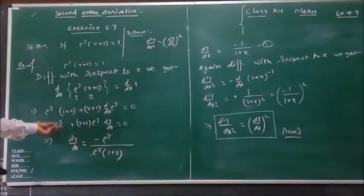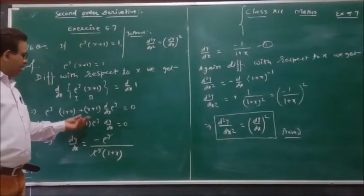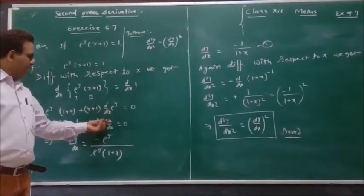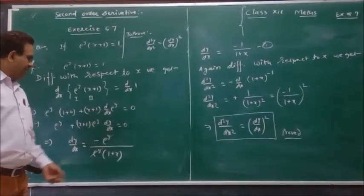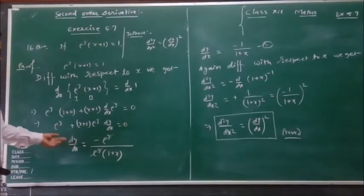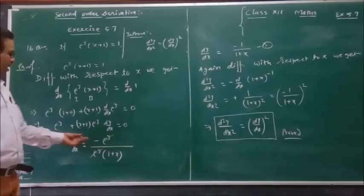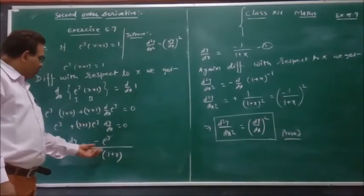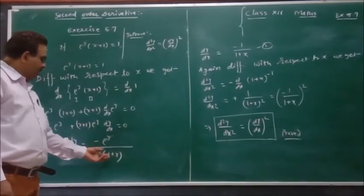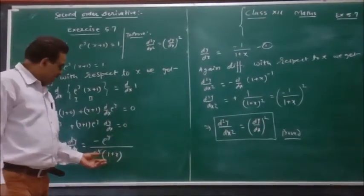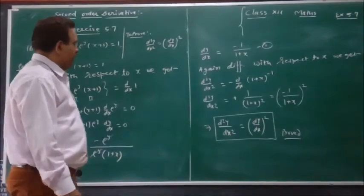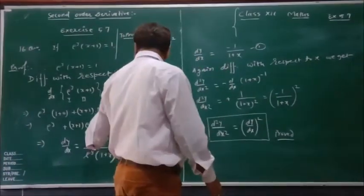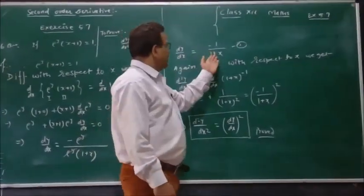After this, e raised to y plus x plus 1, differentiating e raised to y divided by dx. Hence dy divided by dx is equal to minus e raised to y divided by e raised to y times 1 plus x. And after this, e raised to y is equal to minus 1 divided by 1 plus x.